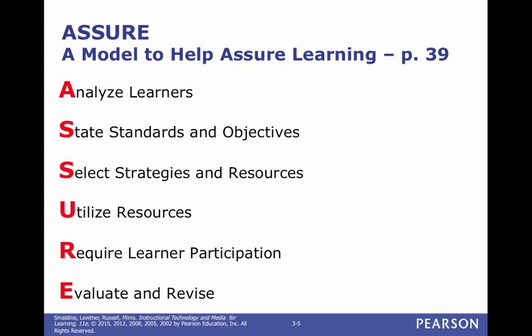On page 39 you'll see each one of these with an explanation. A is for Analyze Learners. S is for State Standards and Objectives. The next S is for Select Strategies and Resources. U is for Utilize Resources. R is for Require Learner Participation. E is for Evaluate and Revise.